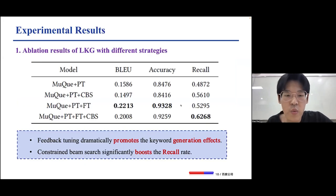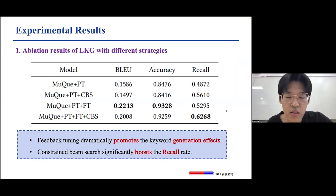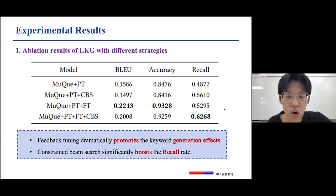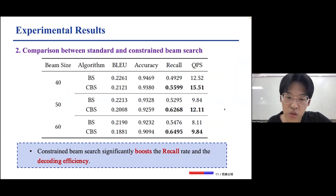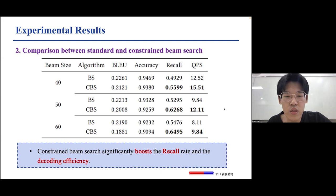For the offline experiments, we first conduct ablation studies on different strategies. As can be seen in the table, feedback tuning dramatically promotes the keyword generation effects, and the constrained beam search significantly boosts the recall rate. We also conduct a detailed comparison across various beam sizes, and the results show that constrained beam search significantly boosts both the recall rate and the decoding efficiency.